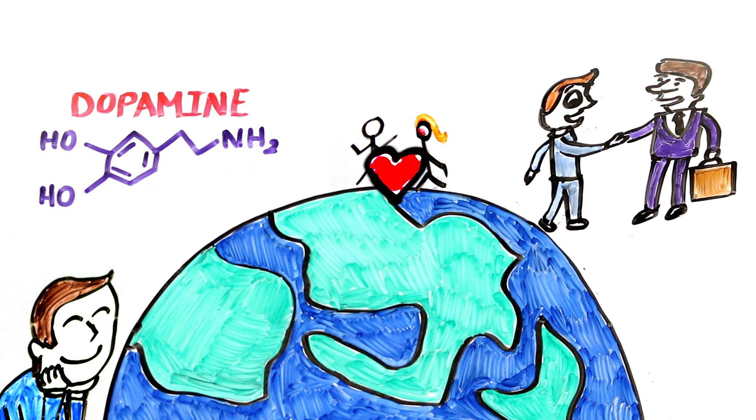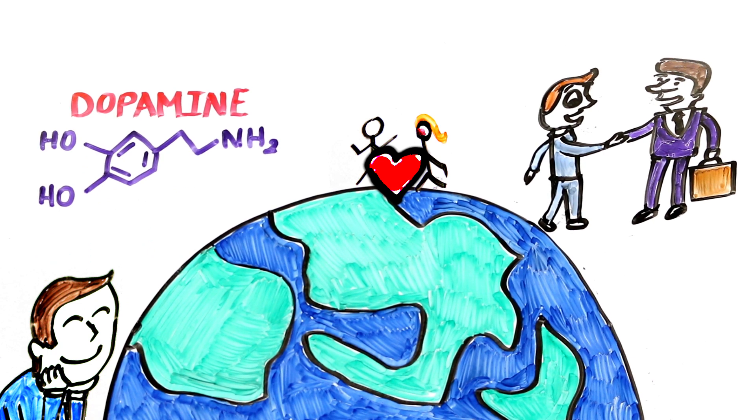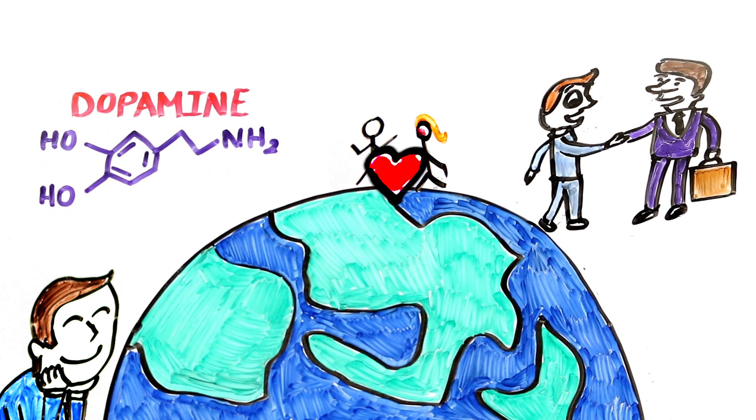Dopamine is key to our experiences of pleasure and pain, linked to desire, addiction, euphoria and a surge may cause such acute feelings of reward that it makes love hard to give up.